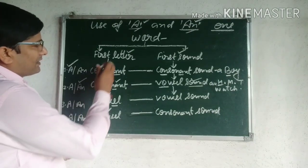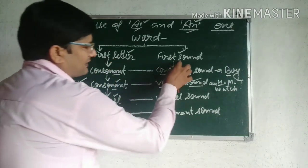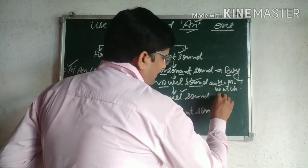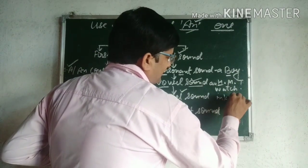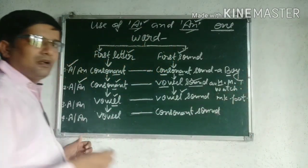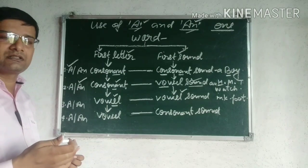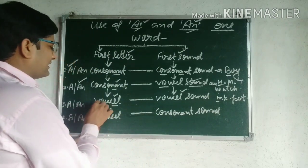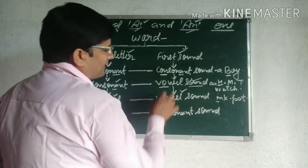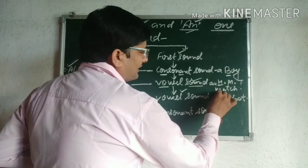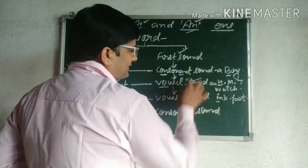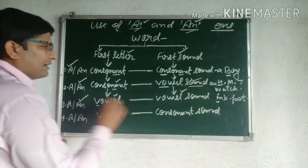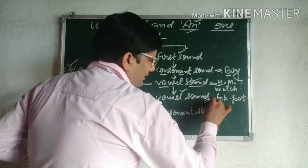Case 3: First letter vowel, first sound भी vowel. Example — 'ink pot': I आपका first letter vowel है, और first sound भी 'ink pot' में vowel है. ऐसी condition में ink pot के पहले An use होगा.